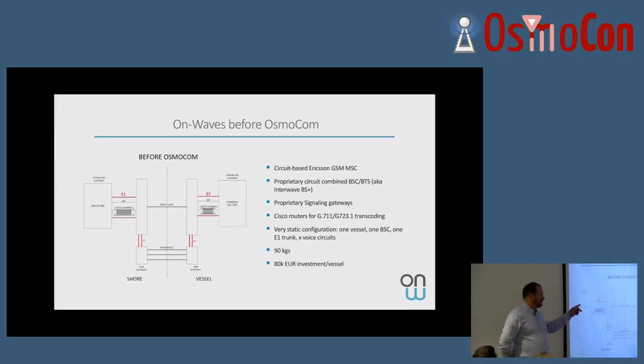So that was a two watt base station. The one you have seen was a two watt base station. We then moved to 25 or 50 watts base stations that we had to attenuate. We were using some proprietary signaling gateways. So those signaling gateways were converting from SS7, MTP2, MTP3, to some kind of MTP3 over SCTP. And we were using some Cisco devices in order to do again, TDM to G7. We were using G723.1 at that time to carry voice over the VSAT link. So that was a very, very static configuration. You had one E1 trunk for each vessel. One signaling gateway for each vessel, one signaling gateway on board. So all TDM based, 90 kilograms, 80,000 euros.